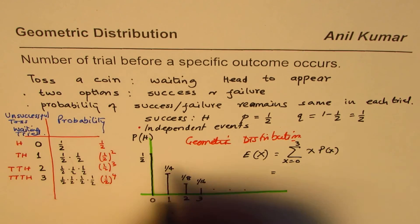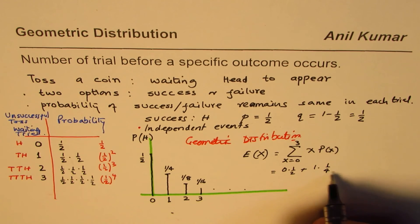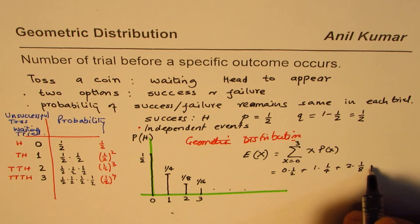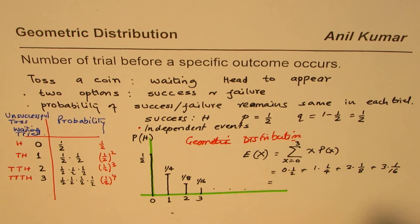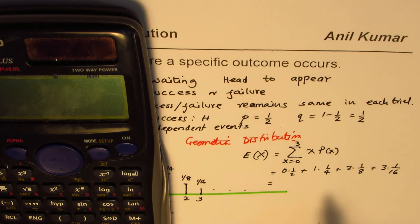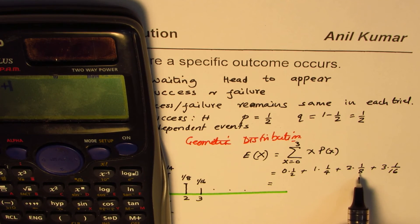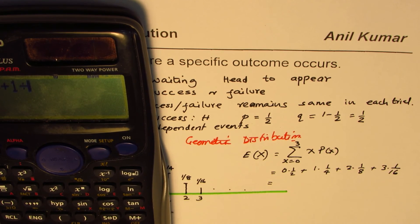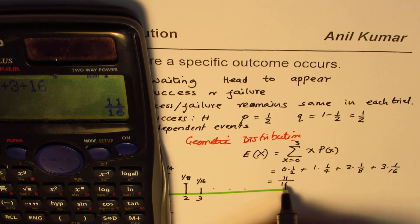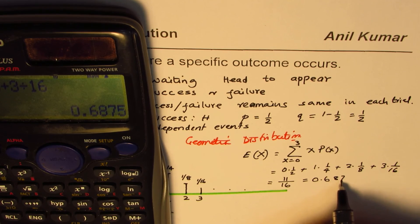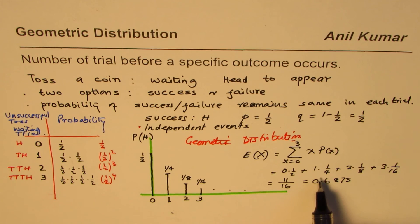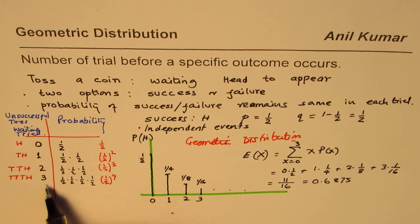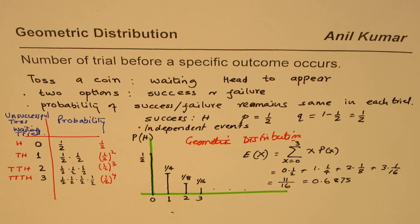So we get: zero times one-half, plus one times one-quarter, plus two times one-eighth, plus three times one-sixteenth. That gives us: zero plus one-quarter plus two-eighths (which is also one-quarter) plus three-sixteenths. So one-quarter plus one-quarter is one-half, plus three-sixteenths gives eleven-sixteenths, or the decimal equivalent of 0.6875. So the expected waiting time up to three trials is about 69 percent.